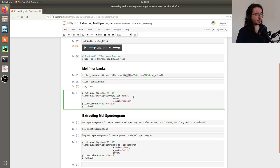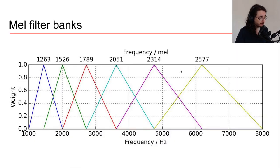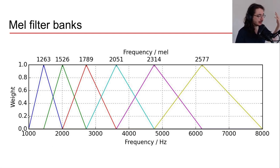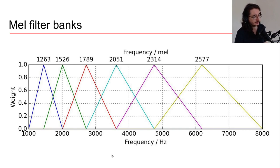Now I want to visualize these MEL filter banks. From my previous video, you may remember this visualization: on the x-axis we have frequency, on the y-axis we have the weights, and we have all the different MEL bands. The points where weight equals one are the centers of the MEL bands, and we have these triangular filters like this.